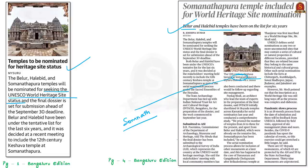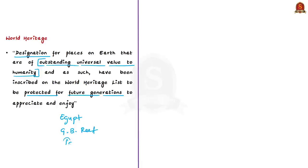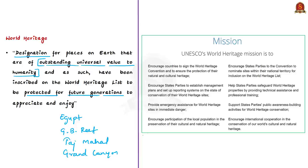In the context of this news article, let us discuss the UNESCO World Heritage Convention, UNESCO World Heritage Site status, and temple sites in India already granted this status. According to UNESCO, 'World Heritage' is defined as the designation for places on earth of outstanding universal value to humanity, inscribed on the World Heritage List to be protected for future generations. Examples include the Pyramids of Egypt, the Great Barrier Reef in Australia, the Taj Mahal, and the Grand Canyon in the United States.